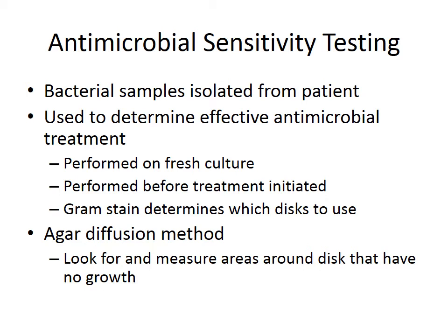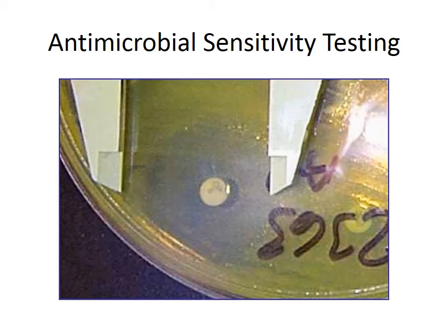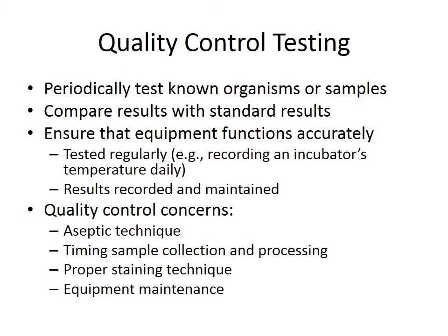It's determined which antibiotics will work best for the bacteria. One common method is the agar diffusion method — you look for and measure areas around an antibiotic disc that have no growth. We have an agar plate with antibiotic-impregnated discs on top, and there will be a certain radius around each antibiotic where the bacteria haven't grown. That radius is how we determine how well those antibiotics work.